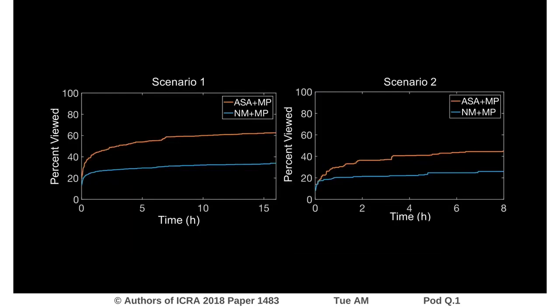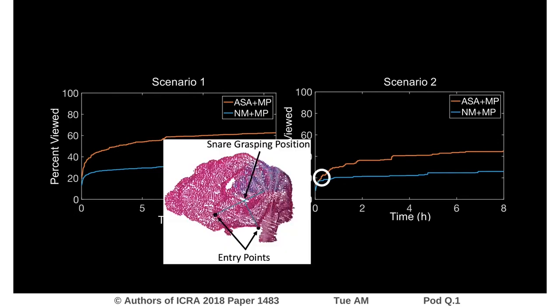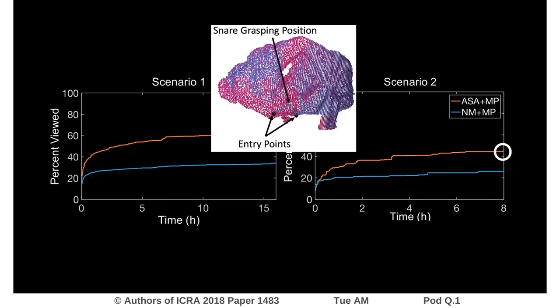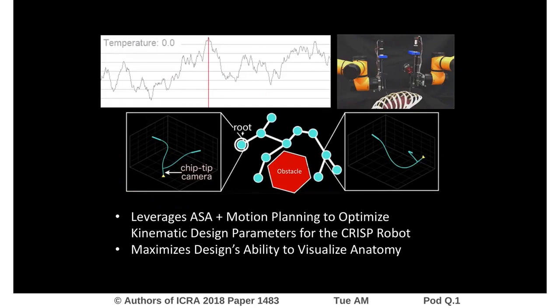In both cases, the method performs well, allowing us to go from designs that are able to visualize a small portion of the anatomy — such as is shown here for scenario 2, where the purple points are the visualized points — to designs which are able to visualize a much larger percentage of the anatomy, such as shown here. Our method, which leverages ASA and motion planning, allows us to optimize the kinematic design parameters for the CRISP robot, resulting in designs which are able to visualize a large percent of relevant anatomy.